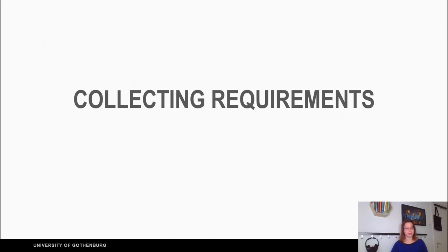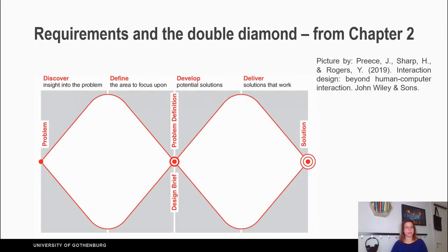Collecting Requirements. In chapter 2 we talked about the Double Diamond. It had four phases: Discover, Define, Develop, and Deliver. The Requirements part is placed on the first part of the Double Diamond, over the phases Discover and Define.